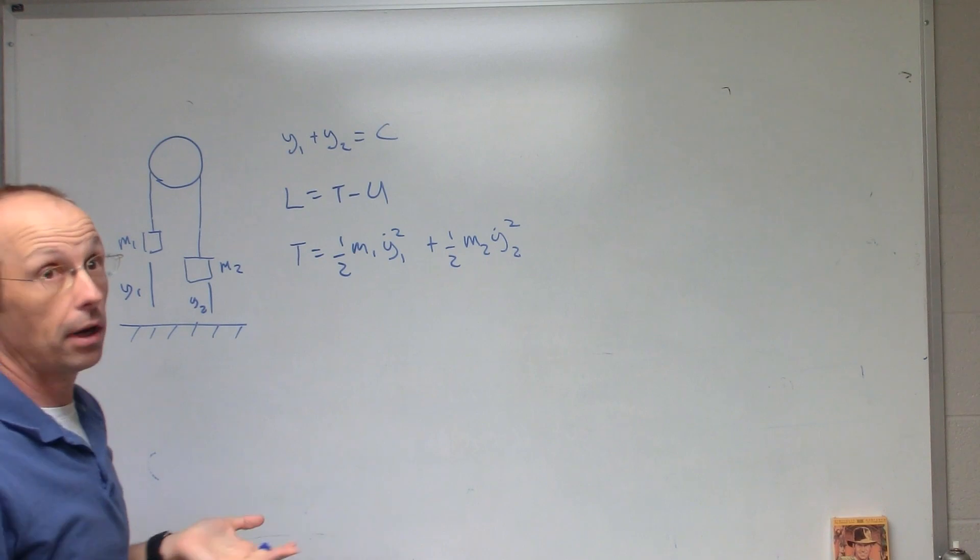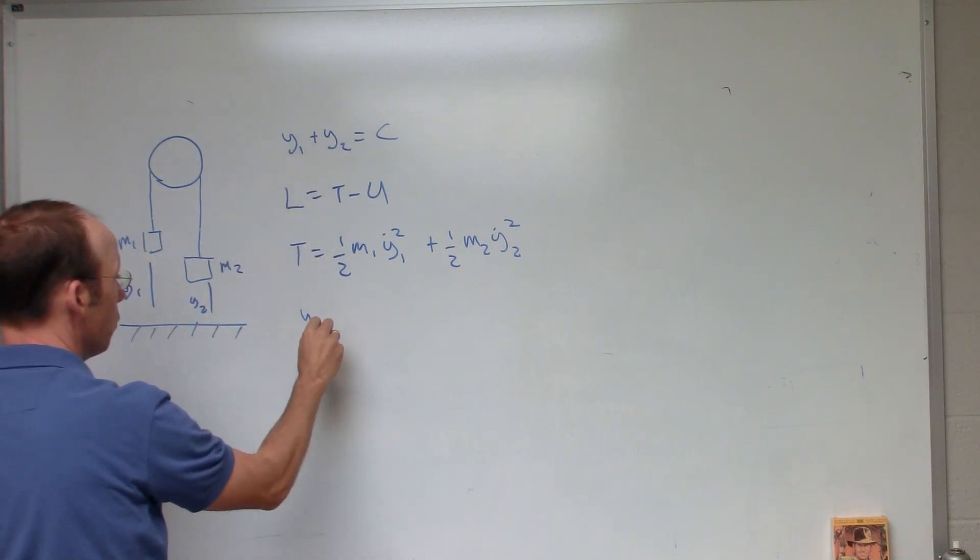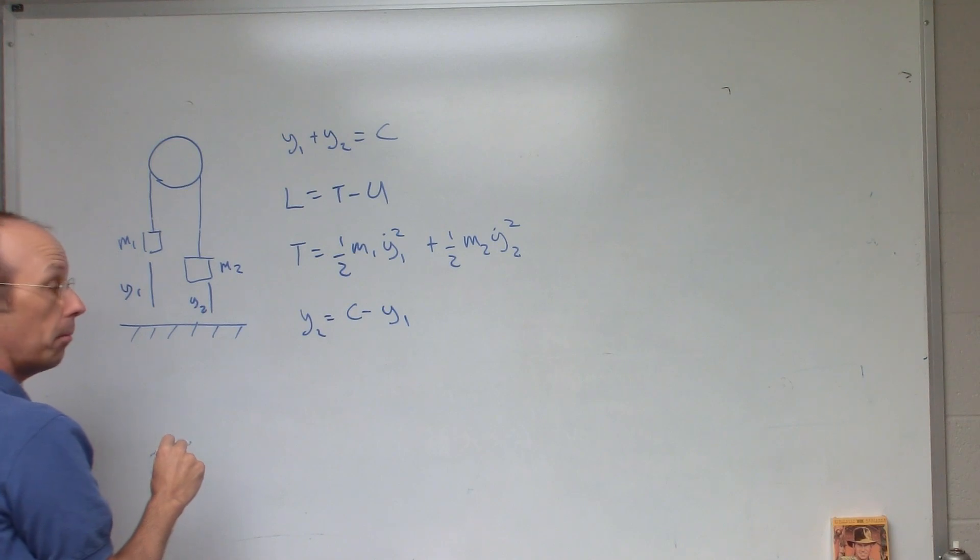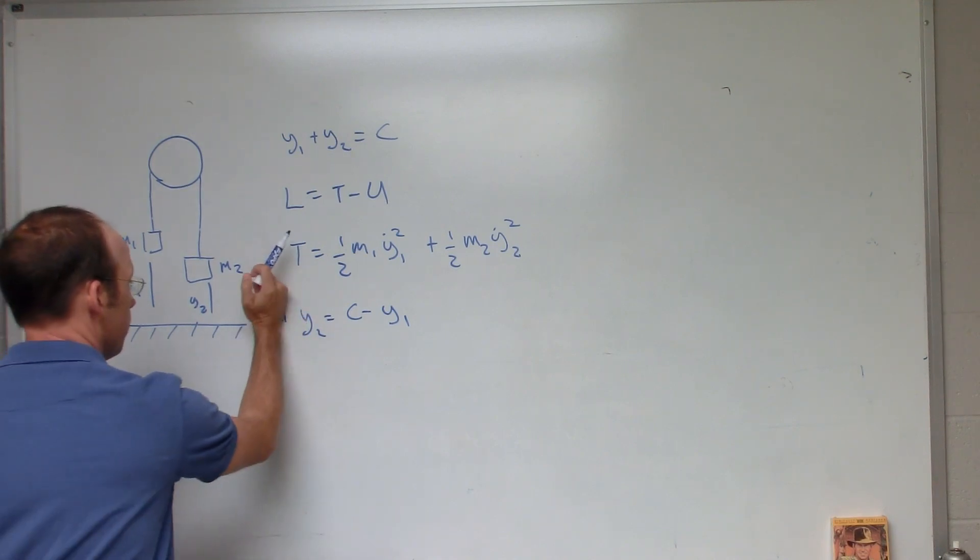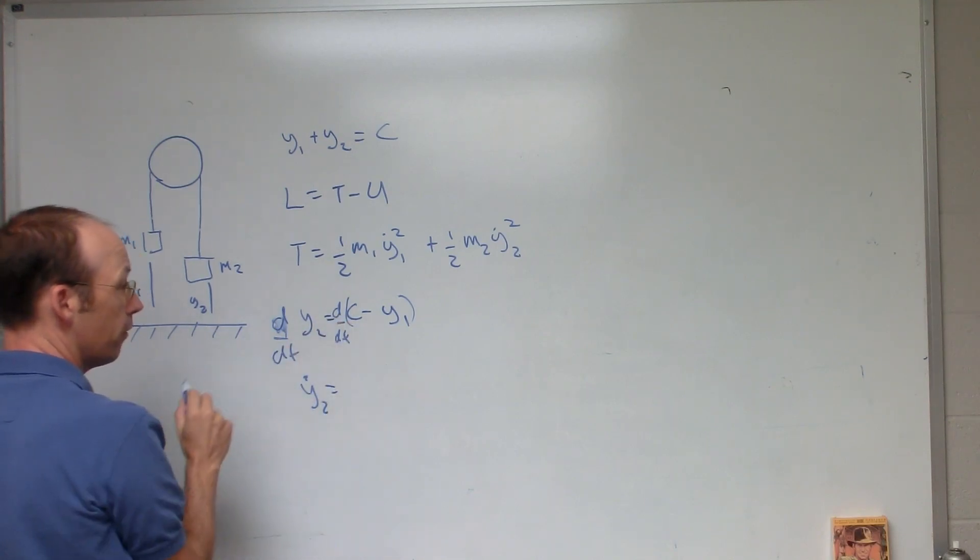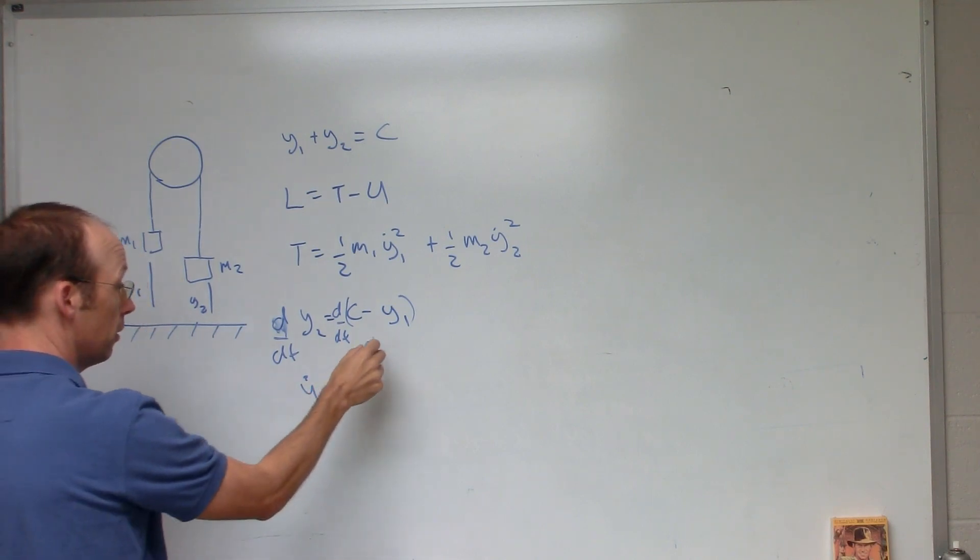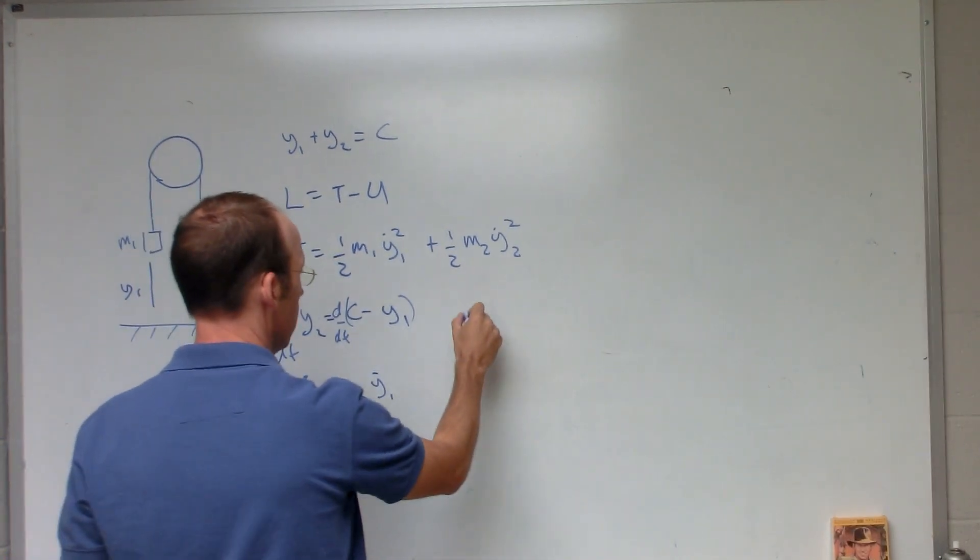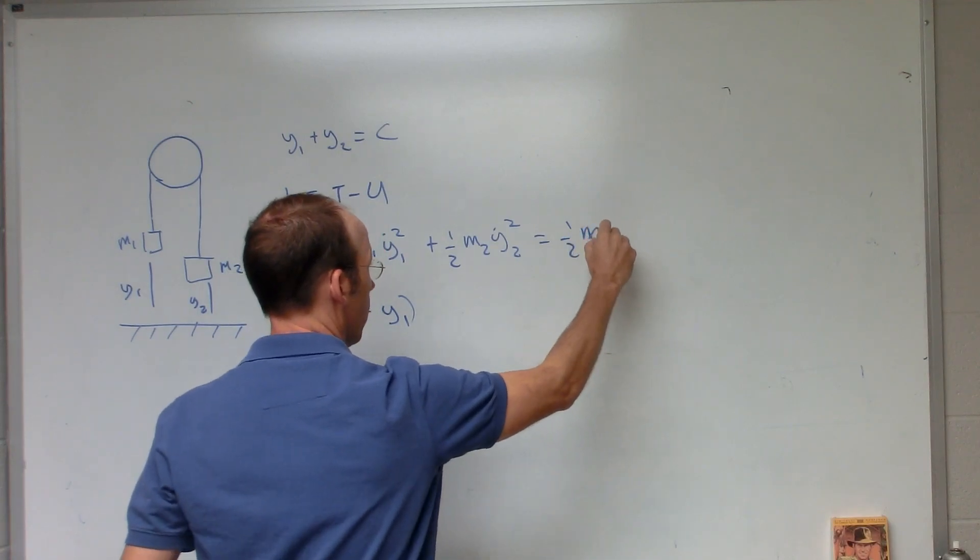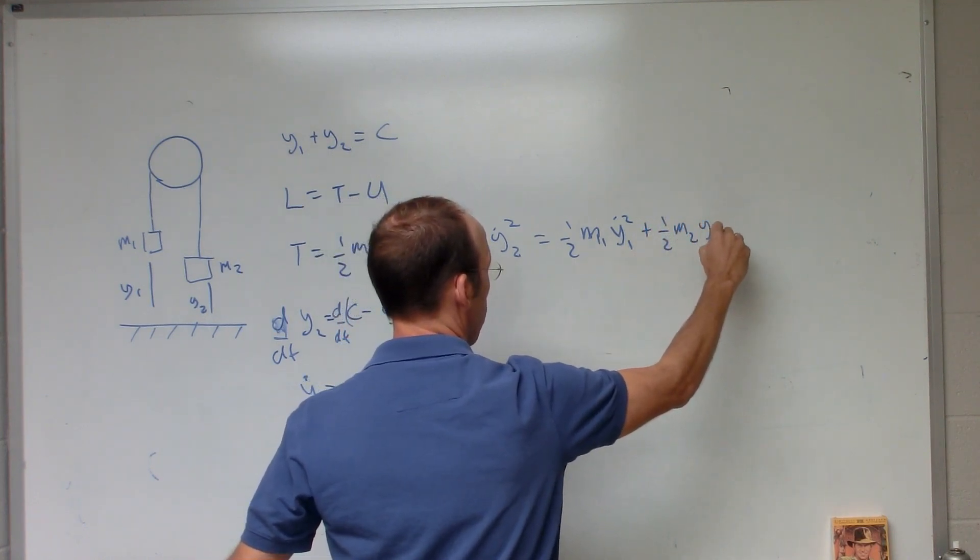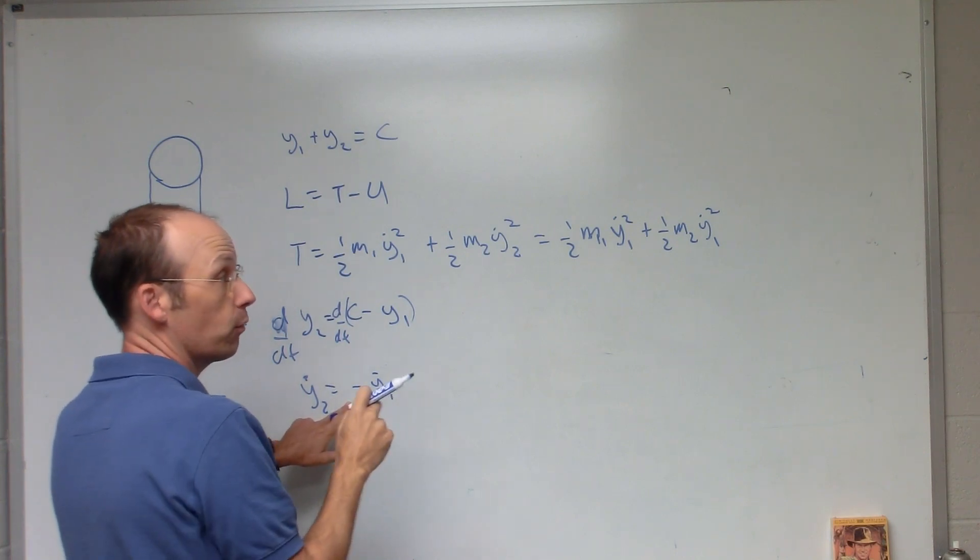So that is the kinetic energy. But I don't want to write it that way. So if I come up here and I say Y2 equals C minus Y1. Now I can find the velocity of Y2 by taking the derivative of this with respect to time. So I get Y2 dot equals the derivative of C with respect to time. It's a constant, so it's zero. And then I get negative Y1 dot. So now I can rewrite my kinetic energy as one half M1 Y1 dot squared plus one half M2 Y1 dot squared. Because yes, that's negative, but when I square it, it doesn't really matter.